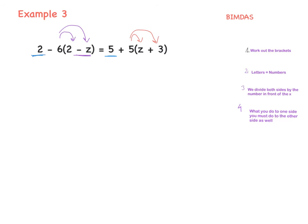We don't do anything with the standalone 2 and 5 yet. We have minus 6 in here, so 2, then minus 6 multiplied by 2 is minus 12, and minus 6 multiplied by minus z — negative by negative is positive — gives plus 6z. Equals 5, which stays. Then 5 multiplied by z is 5z, and 5 multiplied by 3 is 15. Brackets done.